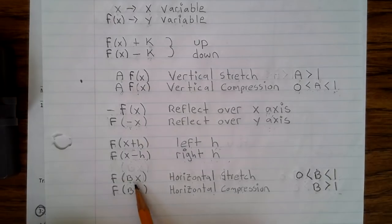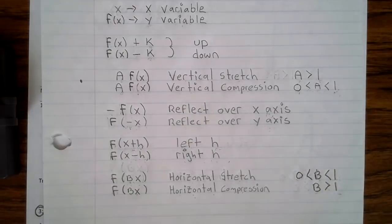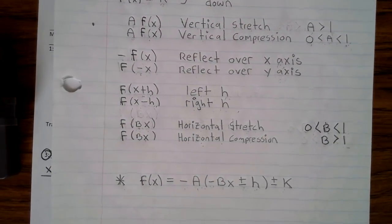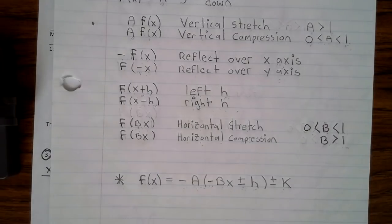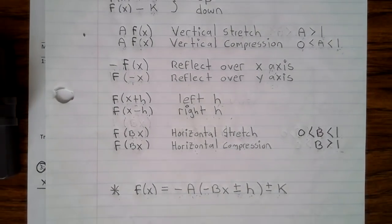Here, when you have f(bx), it's a horizontal stretch when b is greater than 0 but less than 1. And when you have f(bx), it's a horizontal compression when b is greater than 1. And then here, you have all of it combined into one. So if you would, update your notes.